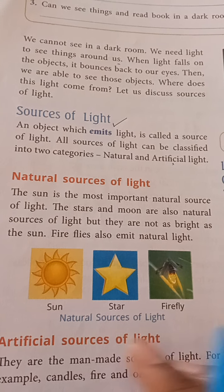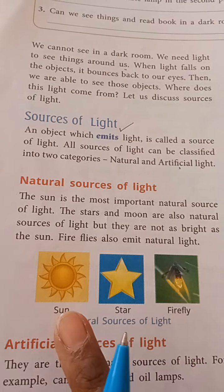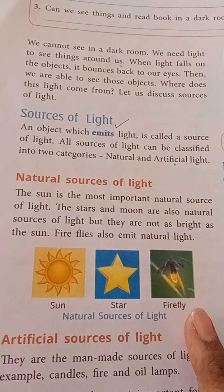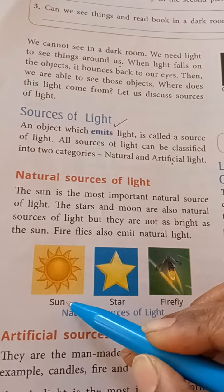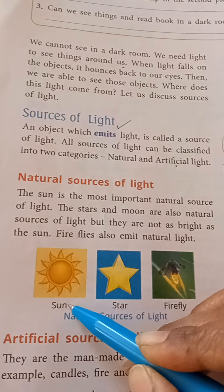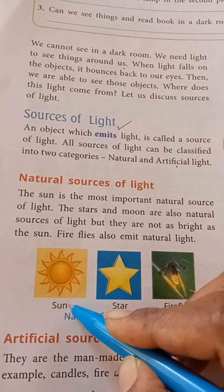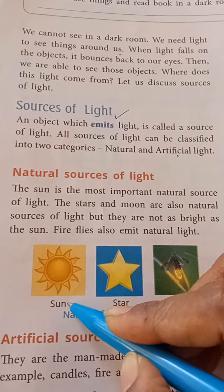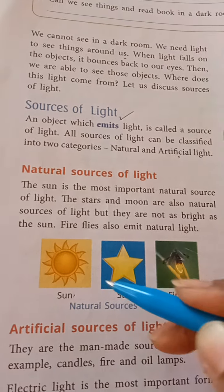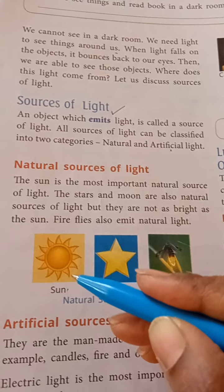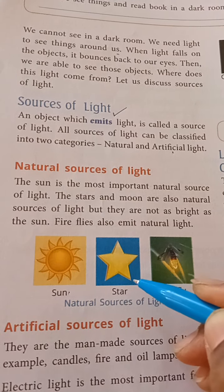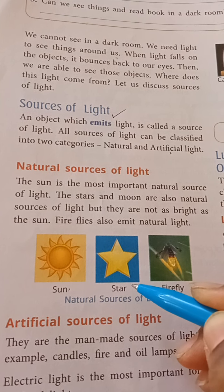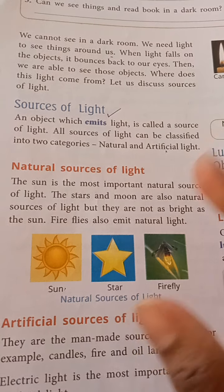These are all the natural sources: sun, stars, and firefly. The sun is the most important natural source of light — it produces both light and heat. Stars and moon are also natural sources of light, but they are not as bright as the sun.